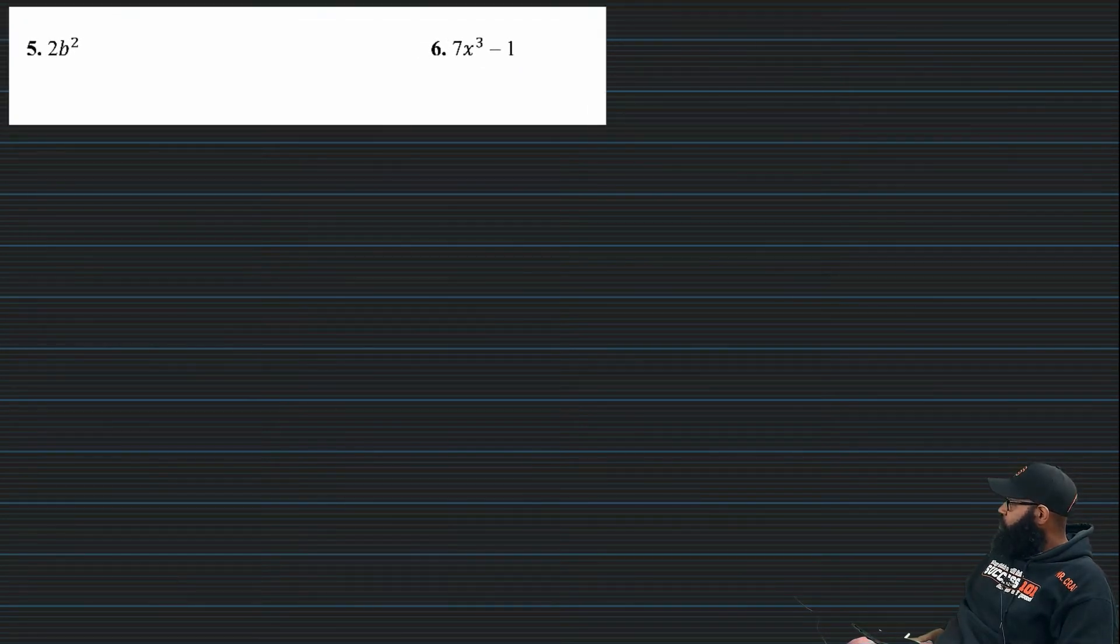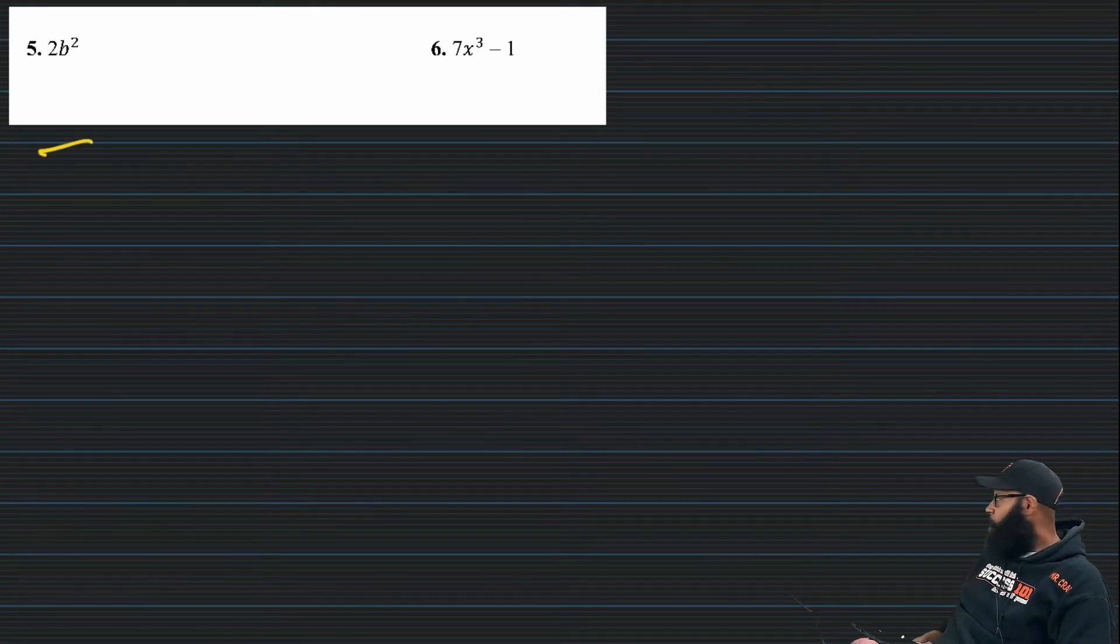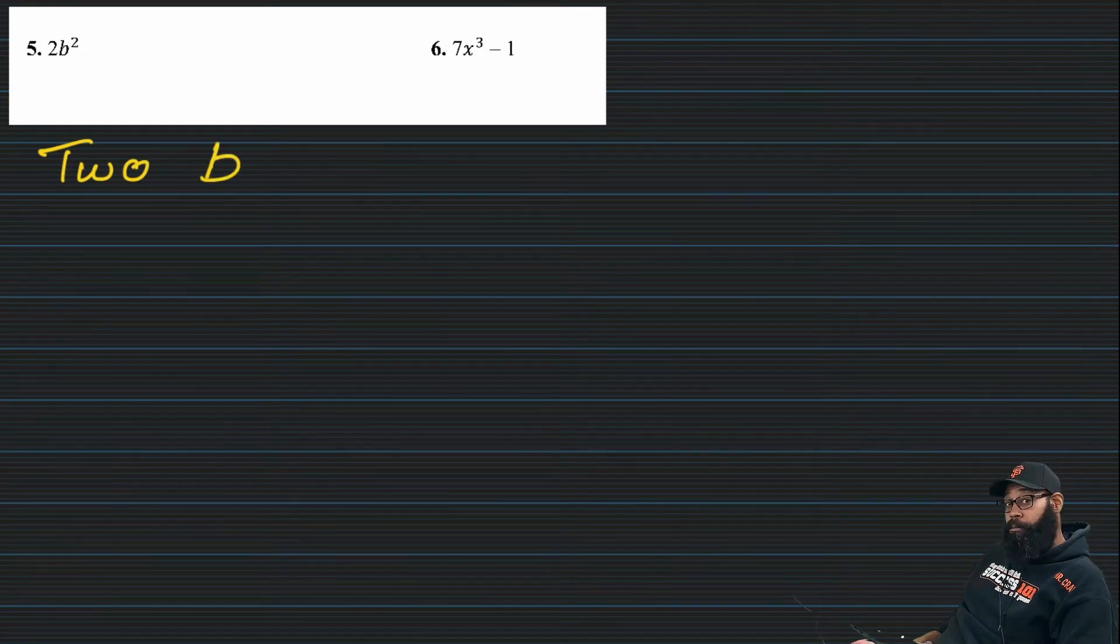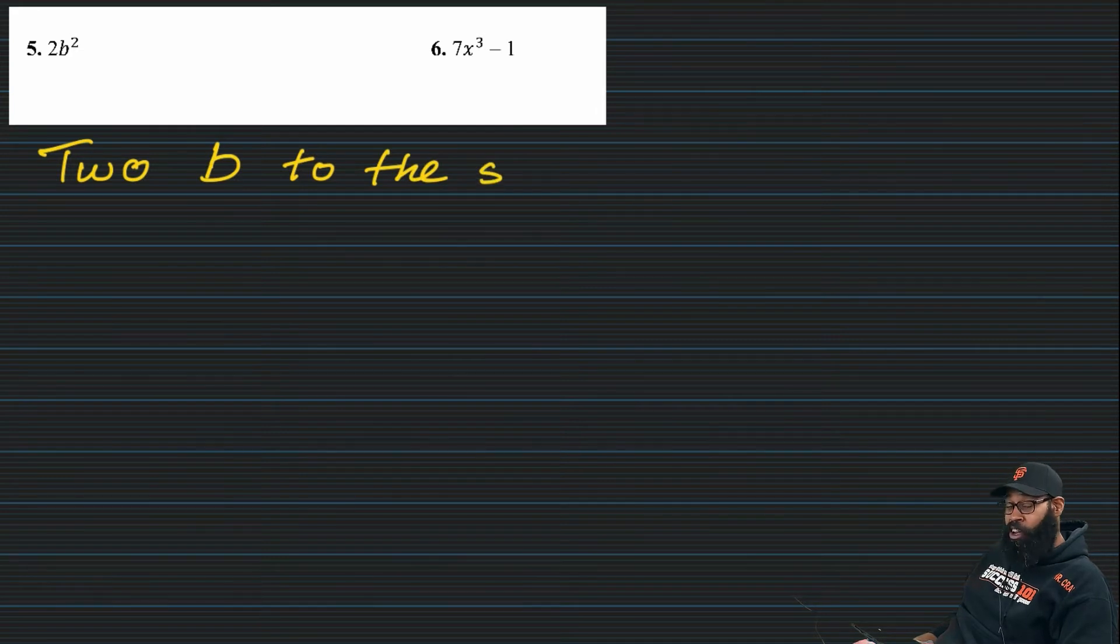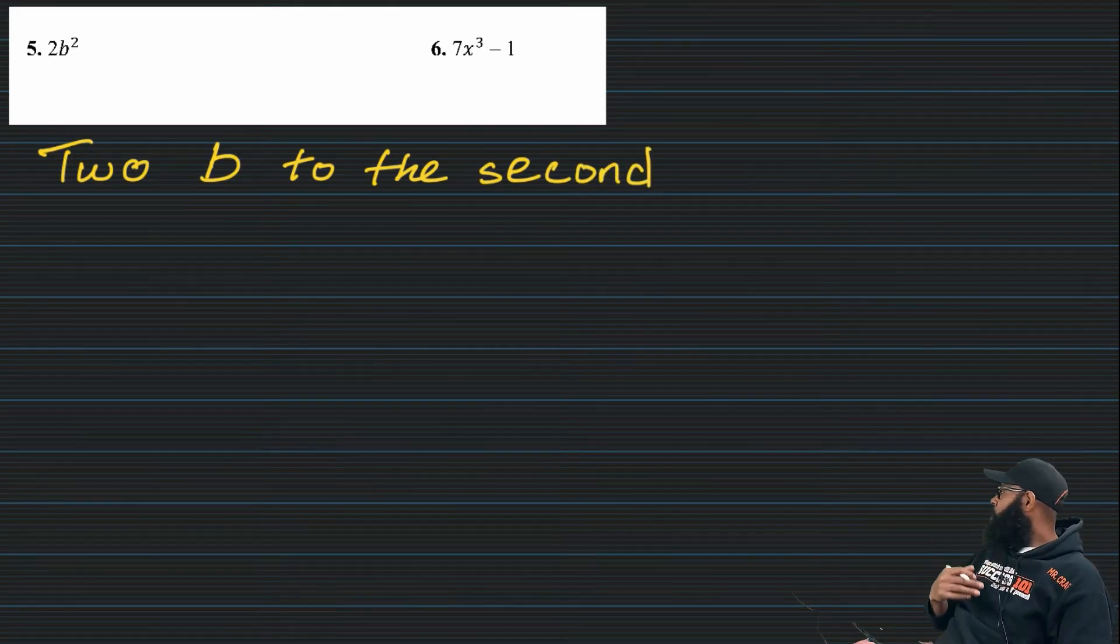So here we go. Looking at something that I guess could be considered a little bit more challenging. Five or six. I don't know. Five doesn't have any operations. So, two B square. And again, if you don't want to say square, you can say, as I'm doing here, to the second power.